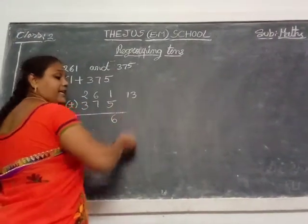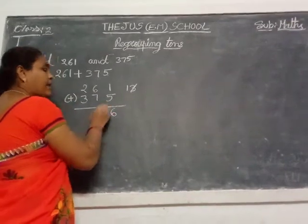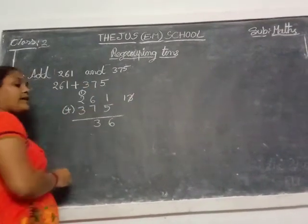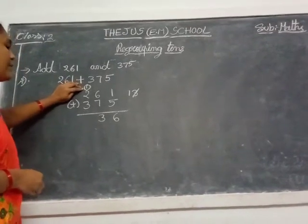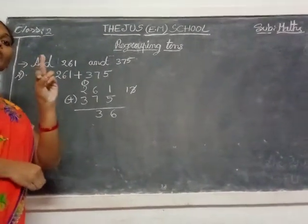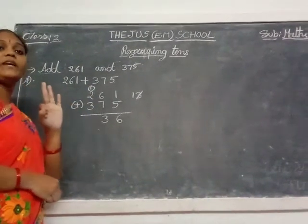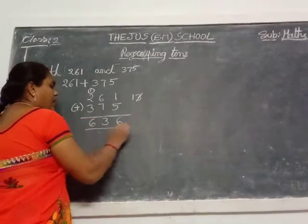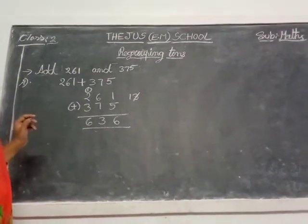The answer is 13. So 3 right here, 10th place. And this one, next number upside, 100th place. So here 1, keep in your mind, take 2 fingers: 1 after 2, 3. That 3, keep in your mind, take 3 fingers: 4, 5, 6. So 36 is the answer here.